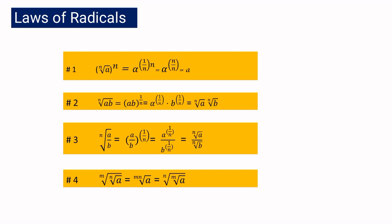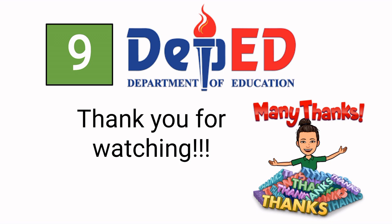These are the different laws of radicals. Law 1: nth root of a raised to n is equal to a. Law 2: nth root of ab is equal to nth root of a multiplied by nth root of b. Law 3: nth root of a over b is equal to nth root of a over nth root of b. Law 4: m-th root of n-th root of a is equal to mn-th root of a, which is equal to n-th root of m-th root of a. I hope you understand. Thank you for watching.